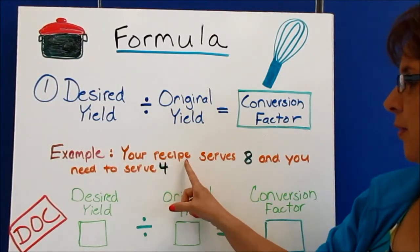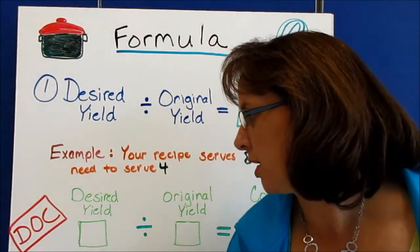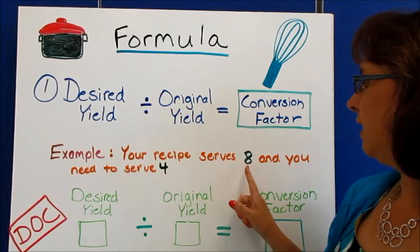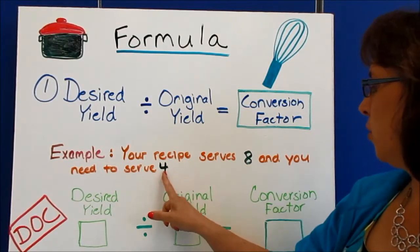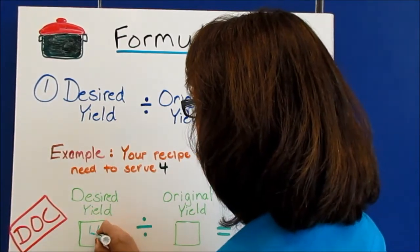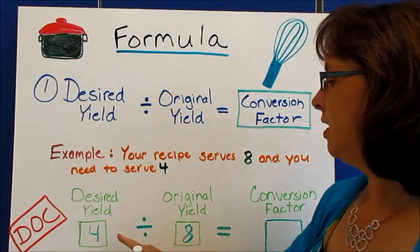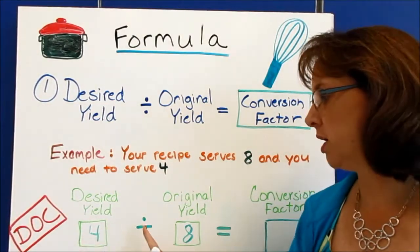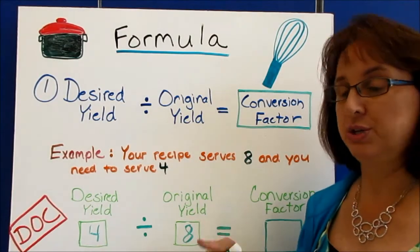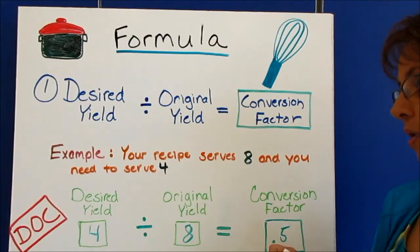This time our example: our recipe serves eight and we need to serve four. So our desired yield — this is what we want to make — is four, and our original yield is eight. So this time we're saying four divided by eight, and four divided by eight is going to be a fraction. If you put that into the calculator you're going to get the decimal 0.5.